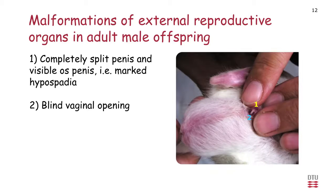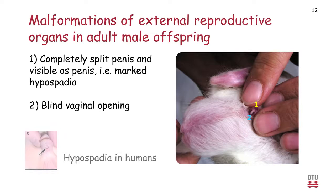We also looked at malformations of the external reproductive organs in adult male offspring. At higher doses we saw a completely split penis, revealing the os penis in the rats — rats differ from humans in having a small bone within the penis — which could be called a very marked hypospadias. In some males we also saw a blind vaginal opening, which a male rat is obviously not supposed to have. This is similar to, but a very severe case of, what can be seen in humans with hypospadias.